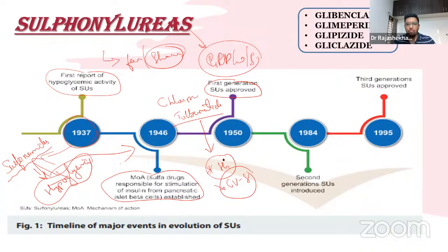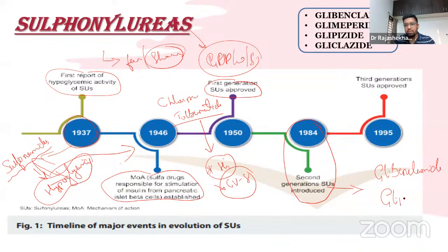After about three decades, second-generation sulfonylureas emerged: glibenclamide and glipizide. Then after 1995, the third generation was approved — glimepiride and gliclazide, especially in extended release form.